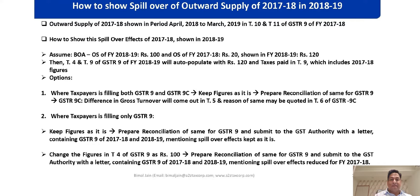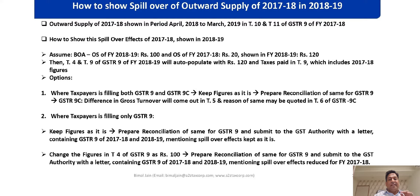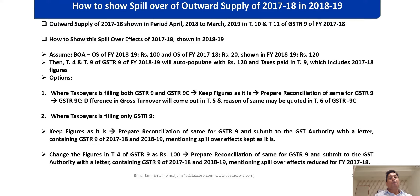The GST audit reconciliation statement audited by a practicing chartered accountant or cost accountant is required for FY 18-19 only when turnover crosses 5 crore rupees. So what happens if it is 2 crore to 5 crore, or you are optionally filing GSTR 9 even though your aggregate turnover is less than 2 crore? Then there are two options.